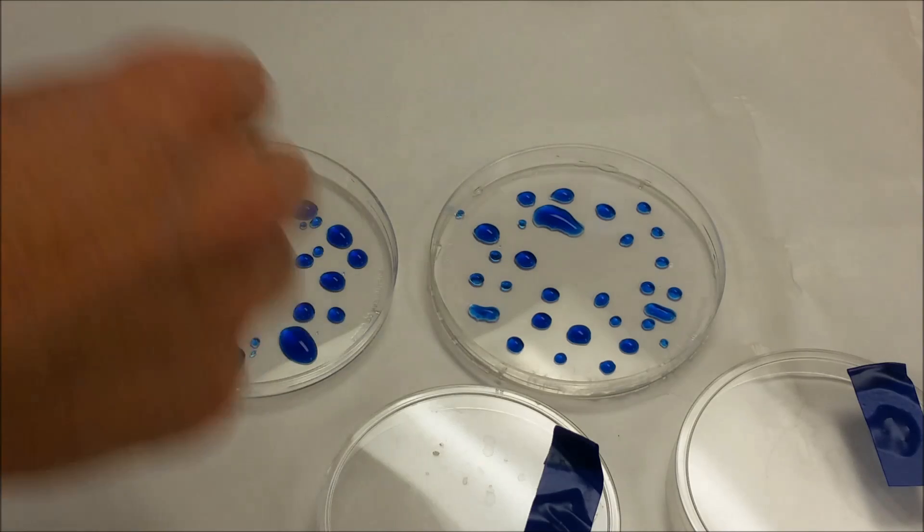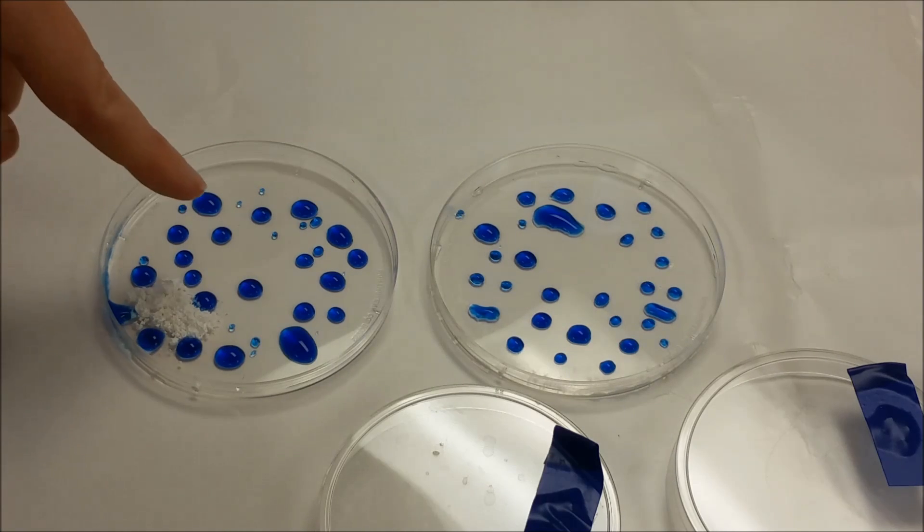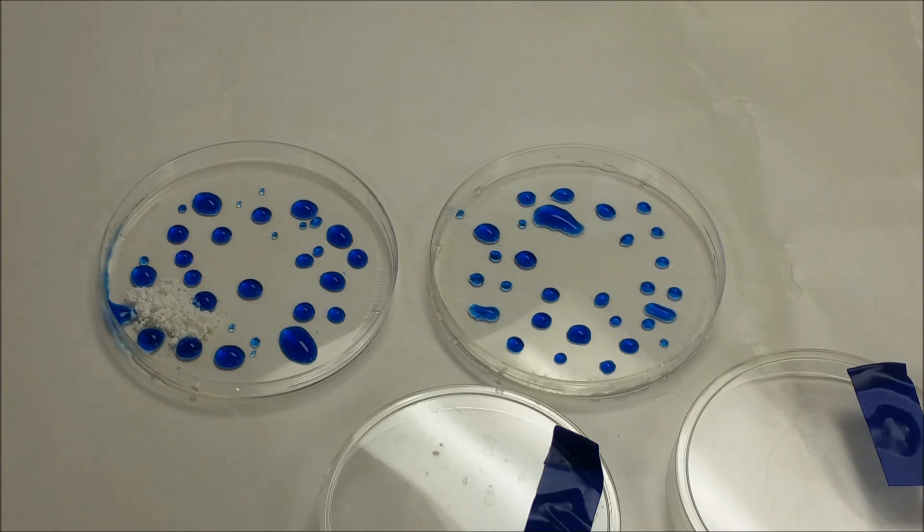I'm going to mix two chemicals in the center of the bromo-cresol green. The bromo-cresol green is blue under basic conditions, and it will be green under neutral and yellow under acidic.